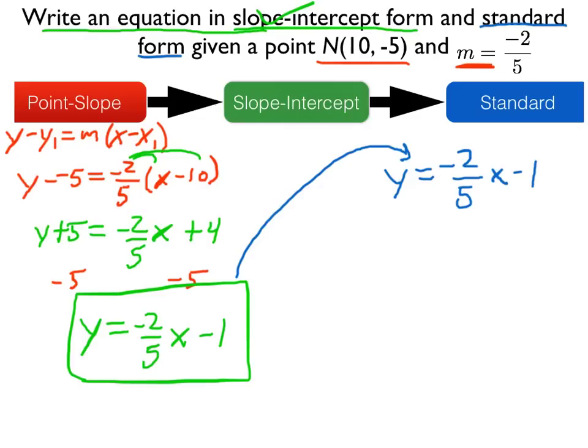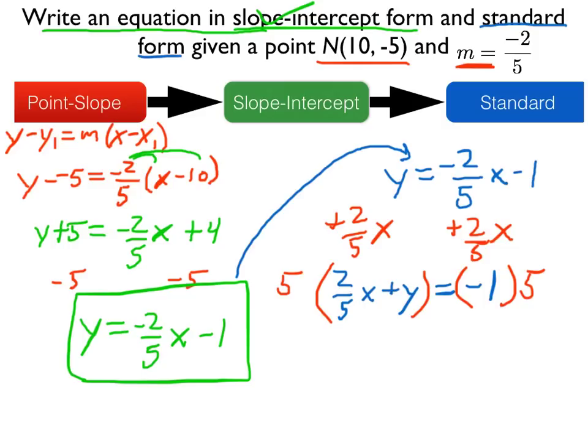Standard form means the x's and y's are together on one side of the equation. So we'll have to add 2 fifths x to both sides of this equation. Then lastly, all of the numbers must be integers. So since we have 2 fifths x, we're going to multiply both sides by 5, the denominator of the fraction. Then distribute that 5 in.